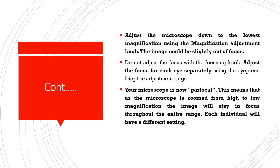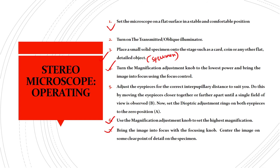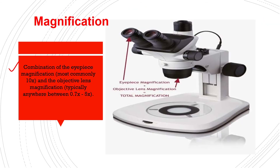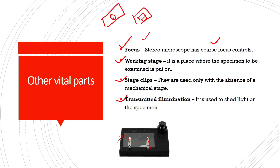Your microscope is now parafocal, meaning that as it is zoomed from high to low magnification, the image will stay in focus throughout. Each individual can set their own settings using the diopter adjustment ring according to their own eye power.